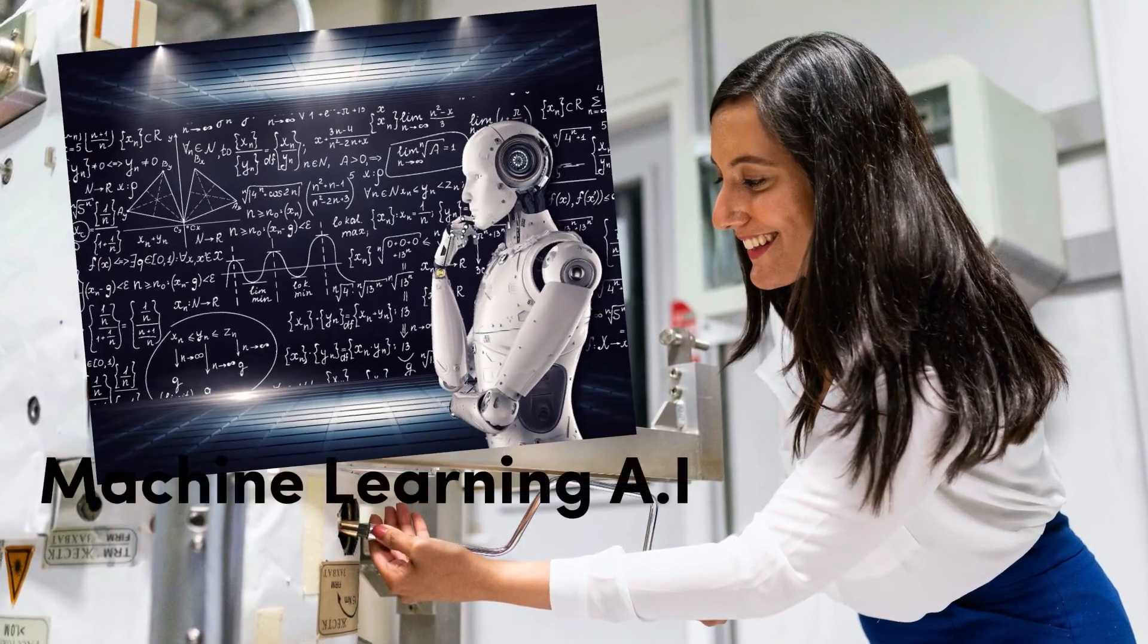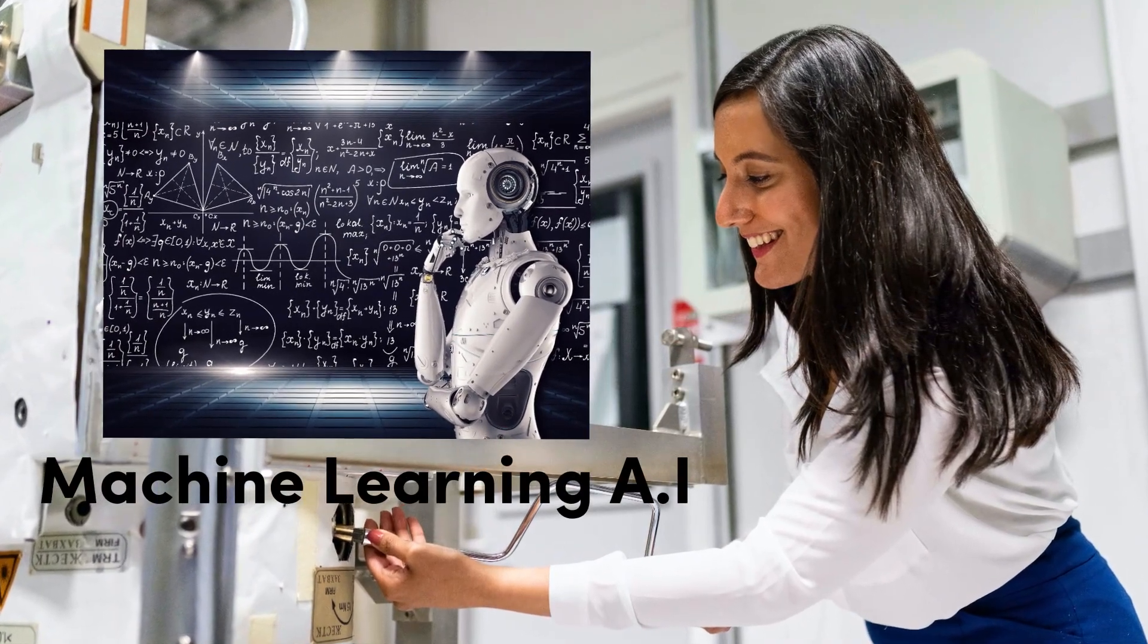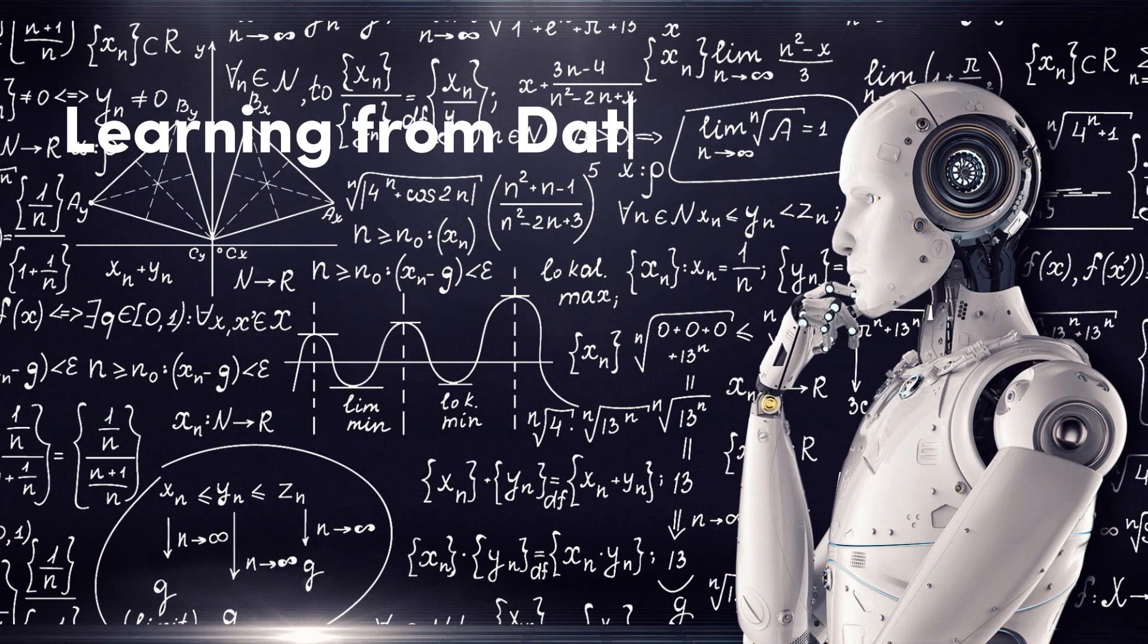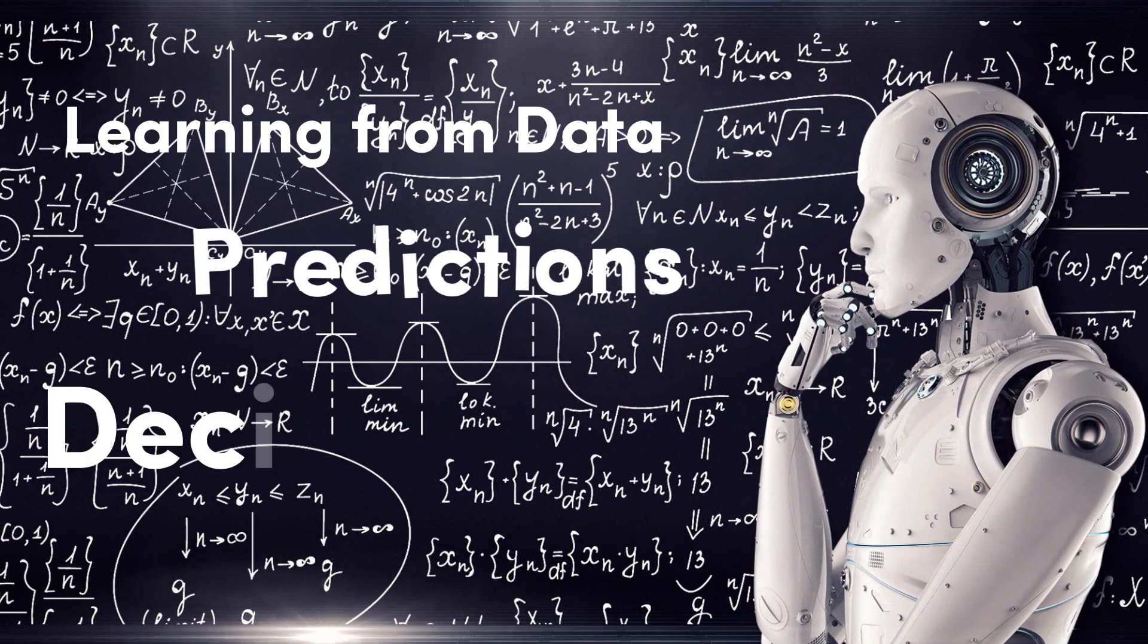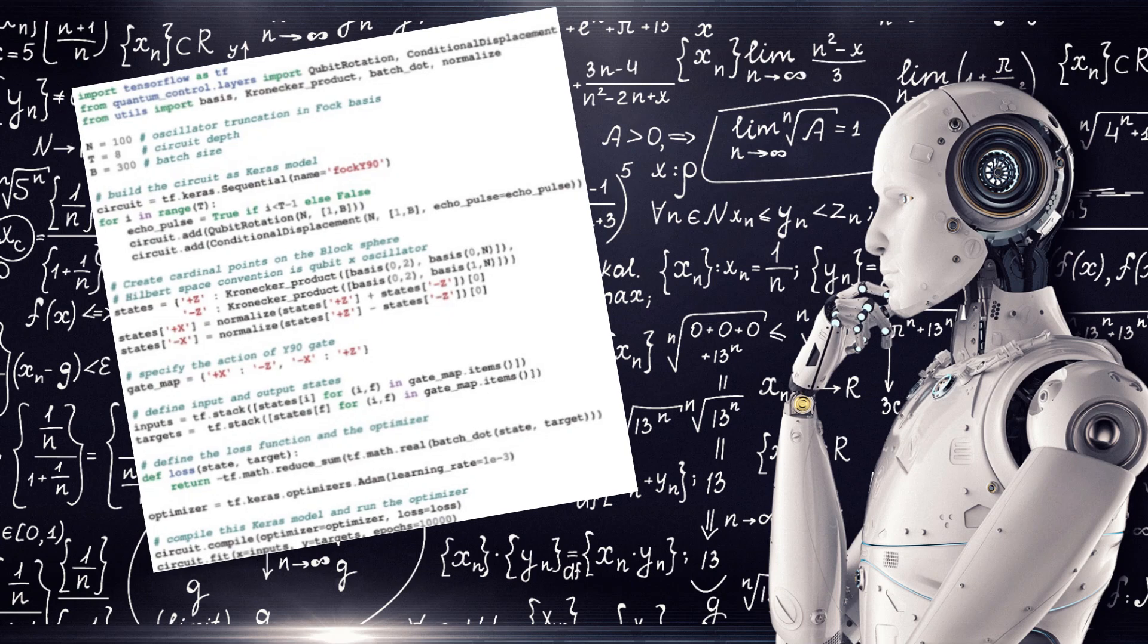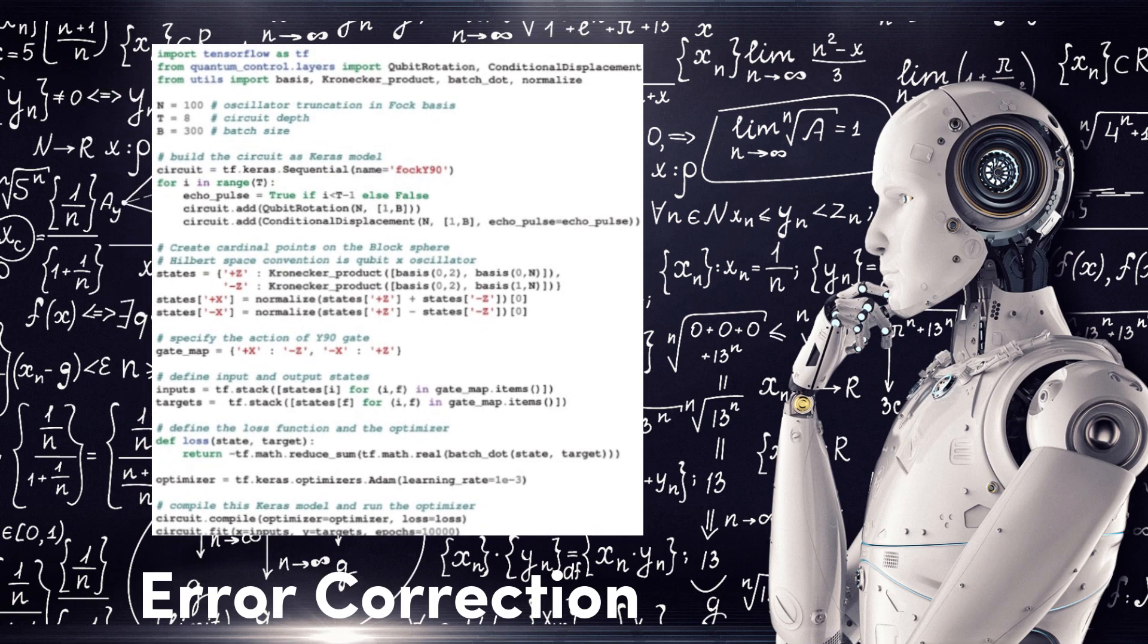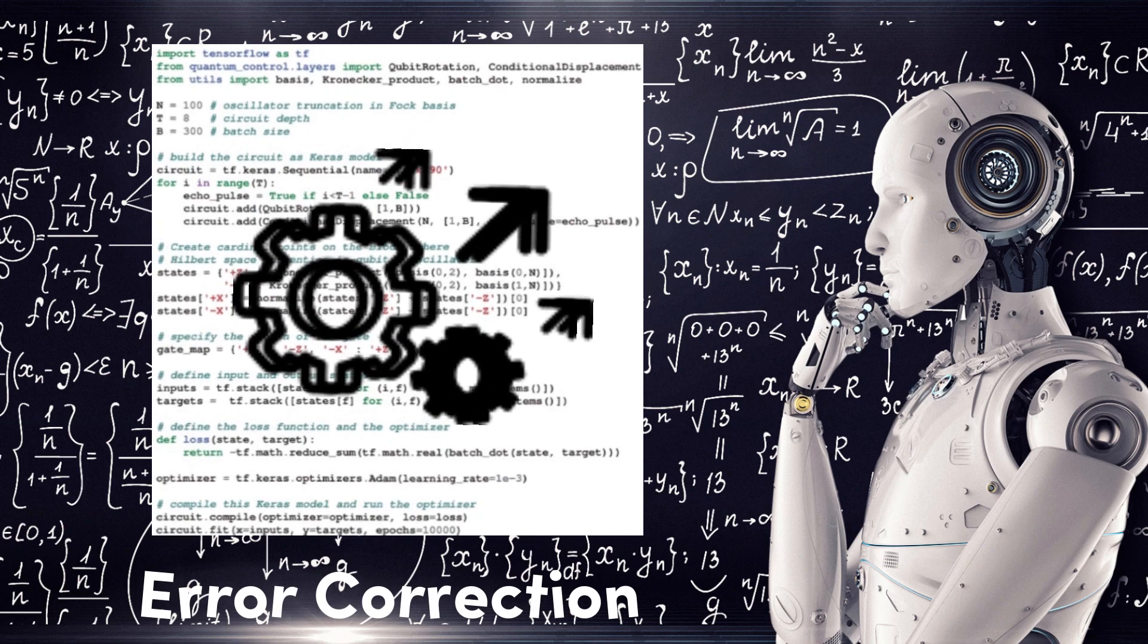The research team used machine learning AI algorithms to improve error correction. Machine learning algorithms are capable of learning from data and making predictions or decisions based on that data. In this case, the machine learning algorithm was used to tweak the error correction routine and improve the efficiency of QEC.